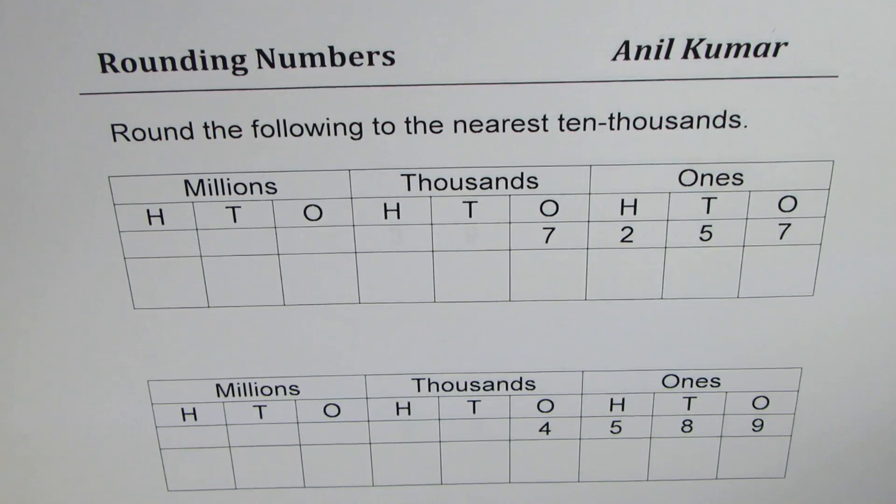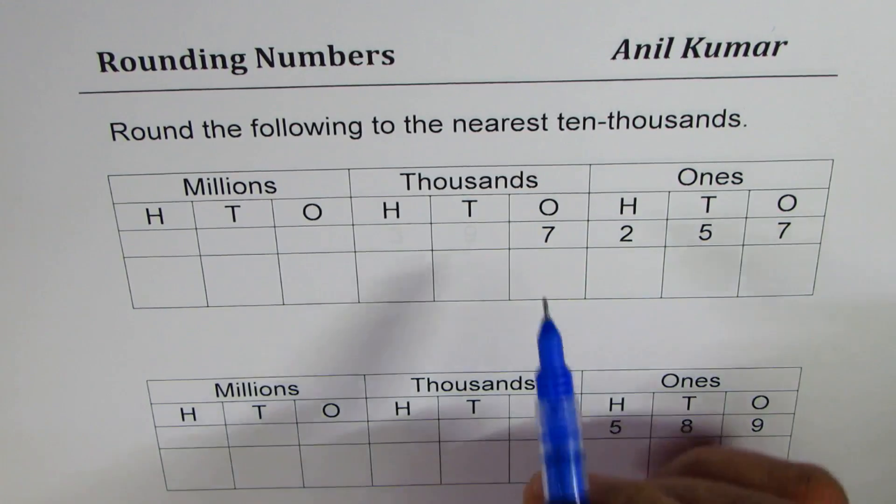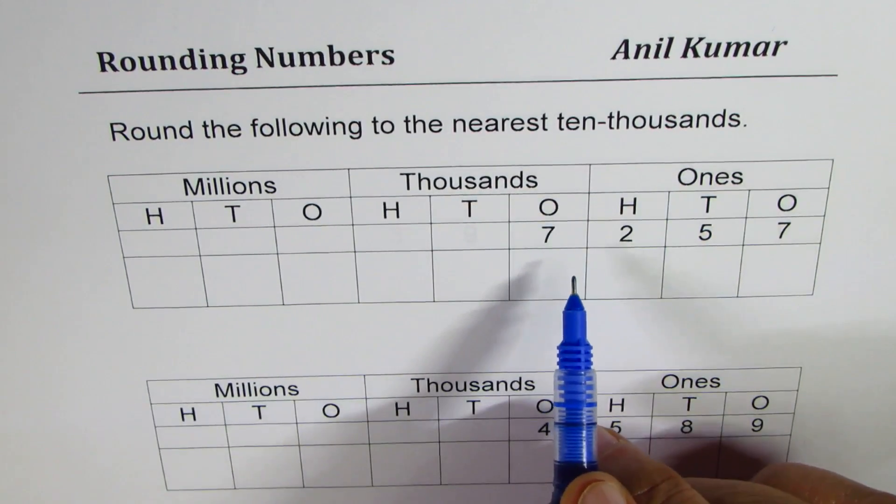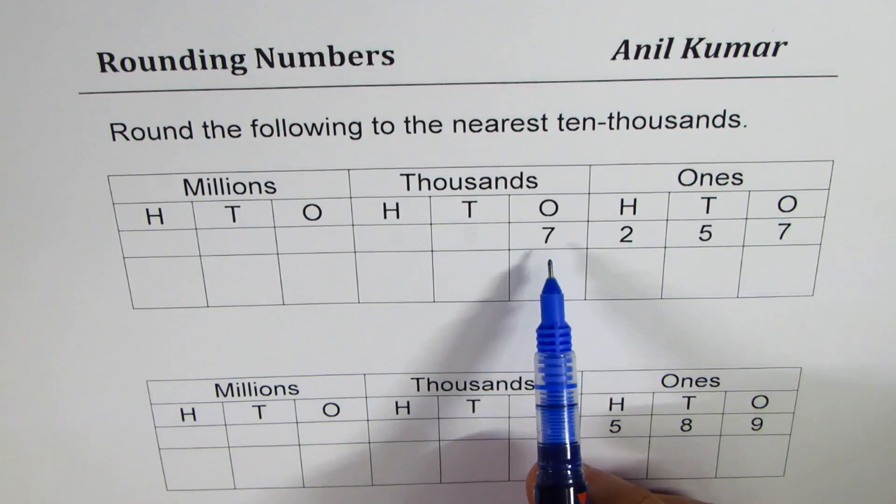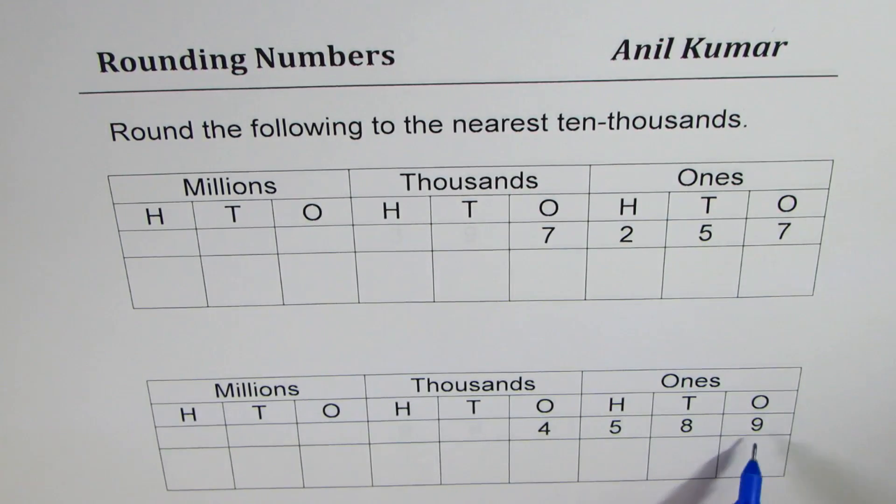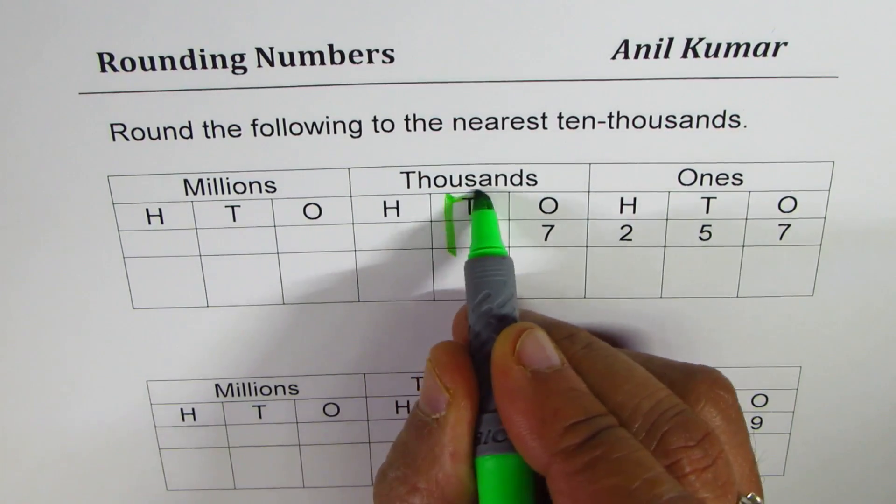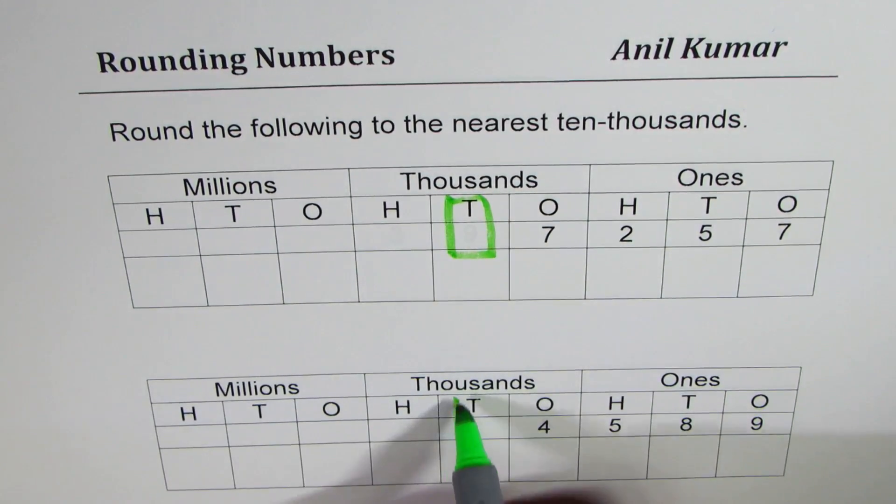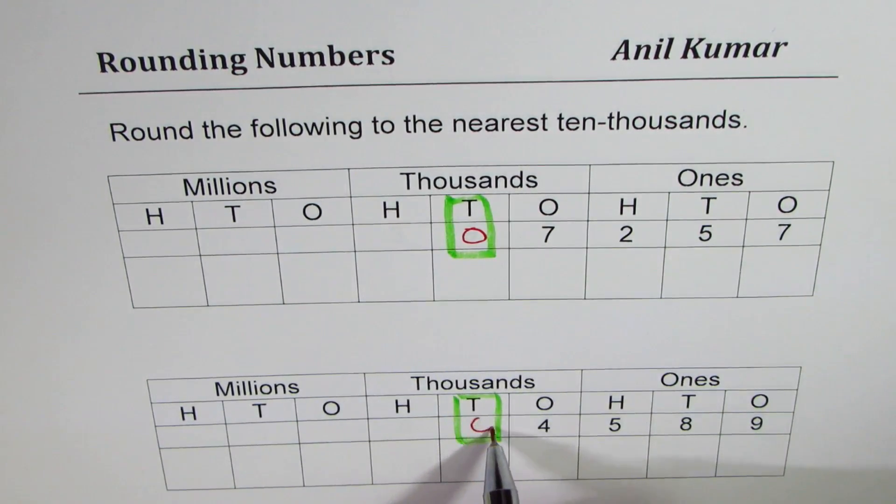Here in this example I have again taken small numbers and they are even smaller than 10,000. So this is a very interesting case. Numbers are smaller than 10,000. It's only 7,257 and 4,589. So we are looking at the position in ten thousands place. What do we have there? We have nothing. So let's put zero there.